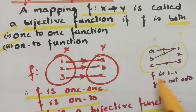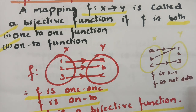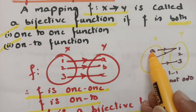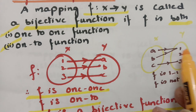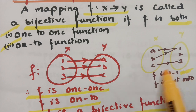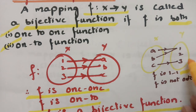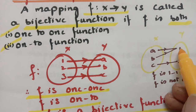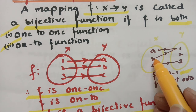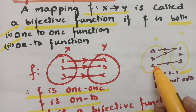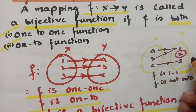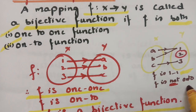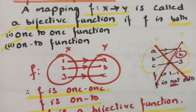Consider another example with {a, b, c} and {1, 2, 3}: the one-to-one condition may hold, but checking onto from set y, element 2 is left over — not every element in set y has an image. Therefore it is not onto, and hence not a bijective function. Both one-to-one and onto must hold for bijection.